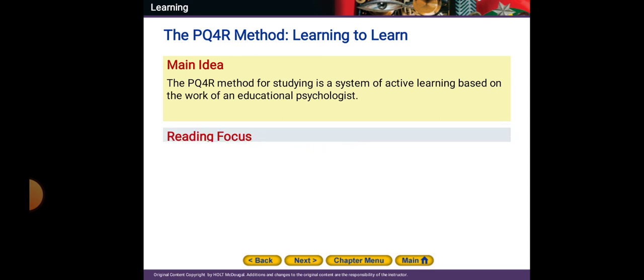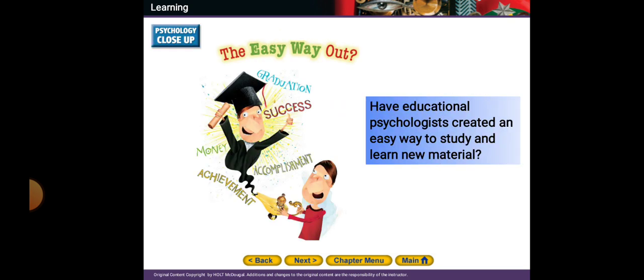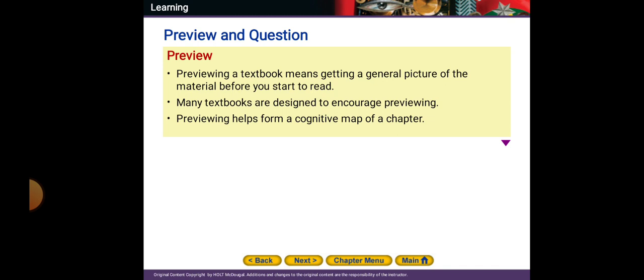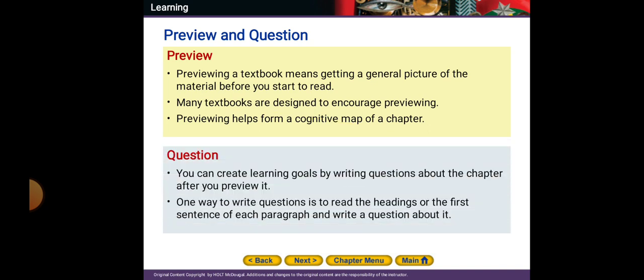Educational psychologists have created an easy way to study and learn new material. Previewing a textbook means getting a general picture of the material before you start to read. Many textbooks are designed to encourage previewing and make the design attractive to draw readers in. Previewing helps form a cognitive map of a chapter. For questioning, you can create learning goals by writing questions about the chapter after you preview it — one way is to read the headings or the first sentence of each paragraph and write a question about it.